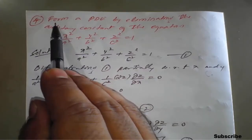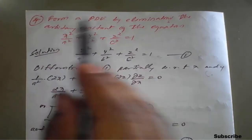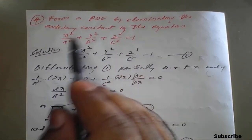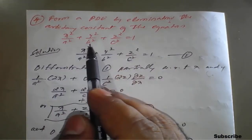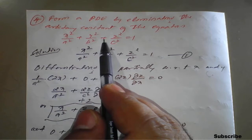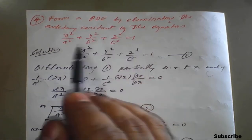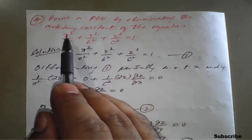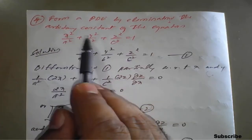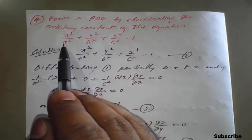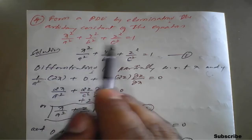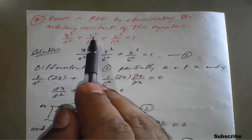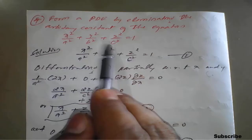The next example is to form a PDE by eliminating the arbitrary constants from the equation x²/a² + y²/b² + z²/c² = 1. Here z is a function, x and y are two independent variables, but a, b, and c are three constants — two independent variables but three arbitrary constants.